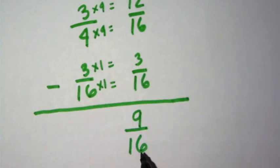Now I take a look at my answer. Is it really my final answer? Is there a number that can divide evenly into top and bottom so this fraction can be in simplest form? No there isn't. So 9 over 16 is my final answer.